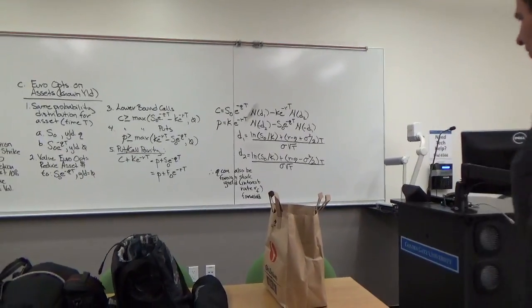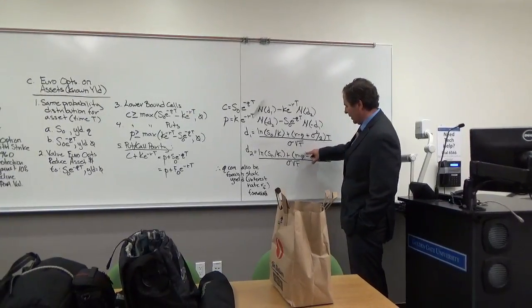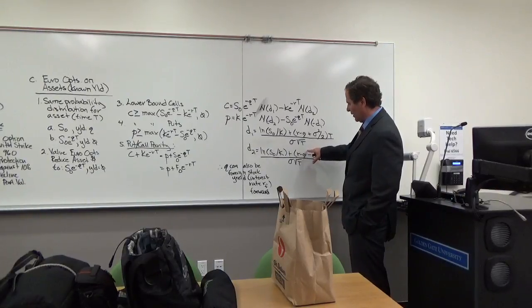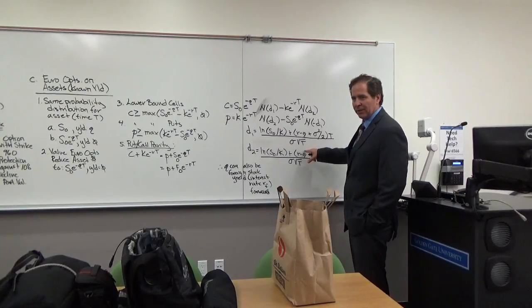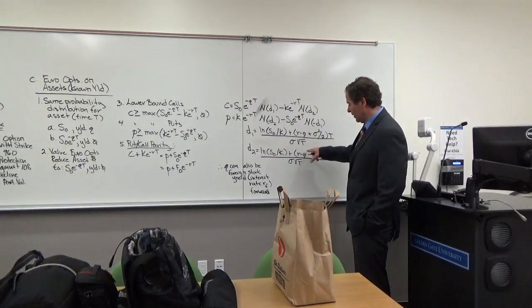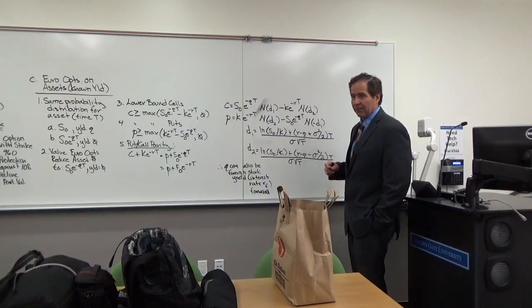The yield is, you're using the Black-Scholes model and the yield can be, it can be either, it's the same model, but it could either be the yield or it could be the foreign interest rate, which you can use if you're doing currency options. So the model is exactly the same. So it's either you're adjusting for the yield on the stock or on the forward interest rate.